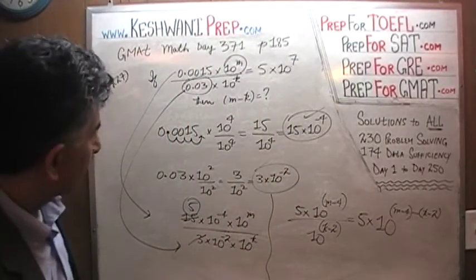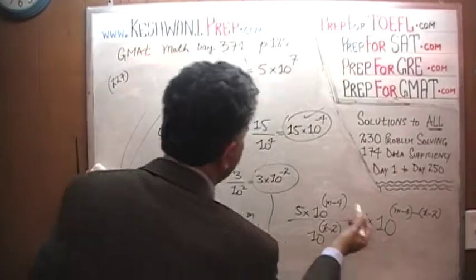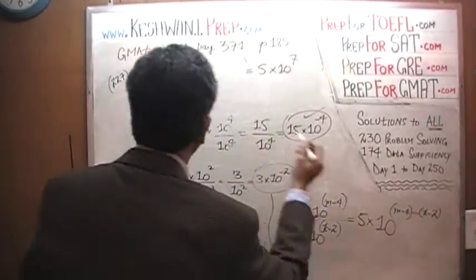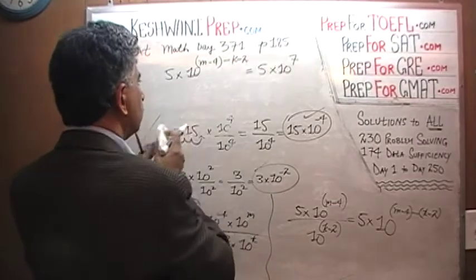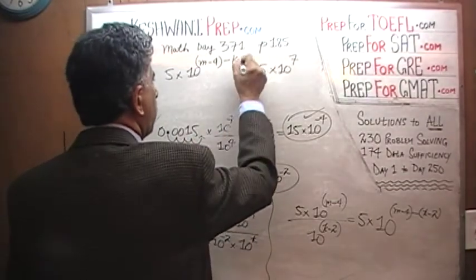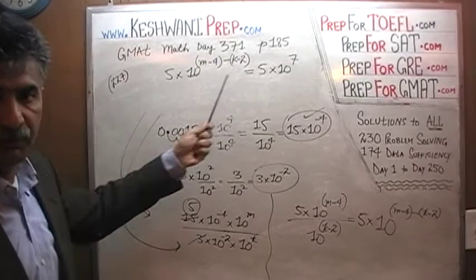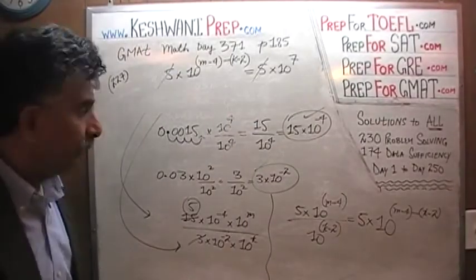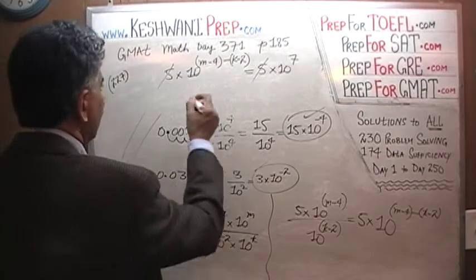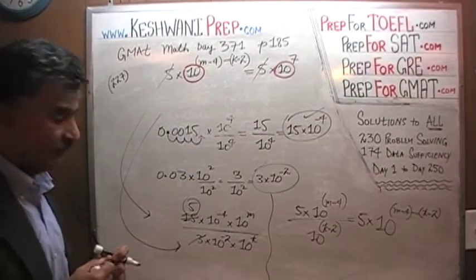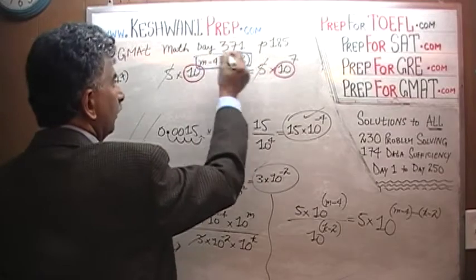This quantity, 5 times 10 raised to M minus 4 minus the quantity K minus 2, has to equal 5 times 10 raised to 7. We see 5 on both sides, so we divide by 5 and it drops out. We now have 10 raised to that exponent equals 10 raised to 7. Because the bases are both 10, the exponents must be equal to each other, meaning that exponent must equal 7.